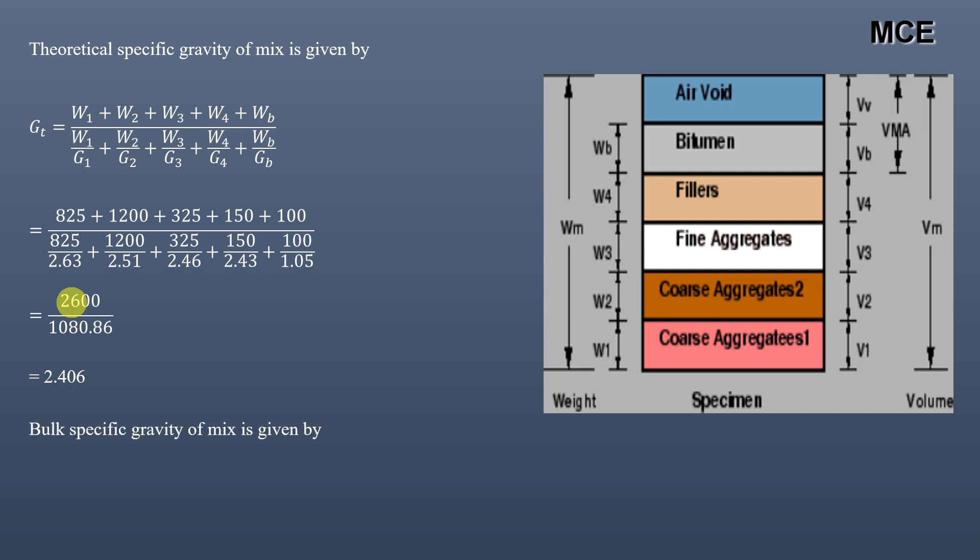After that, we will find the bulk specific gravity of the mix. The bulk specific gravity of the mix is simply given by the weight of the mix divided by the volume of the mix. Weight for the compacted bituminous mix is 1100 grams and volume is 475 cubic centimeters. This gives the bulk specific gravity for the mix as 2.316.